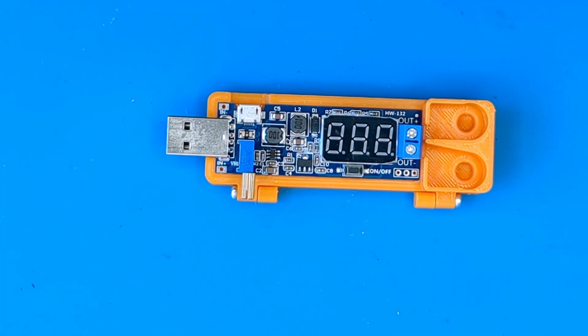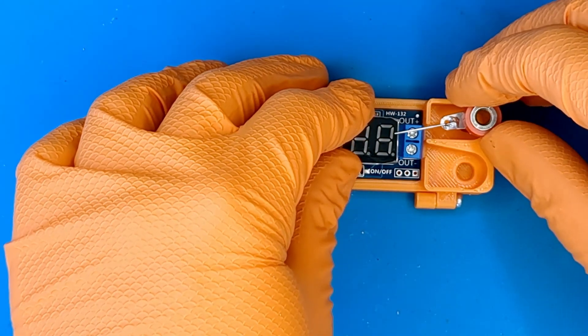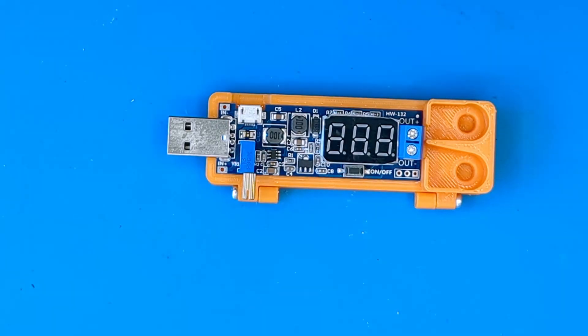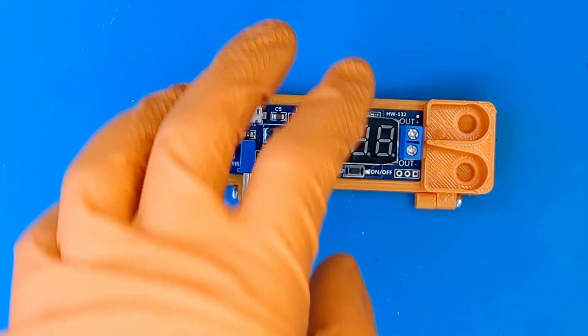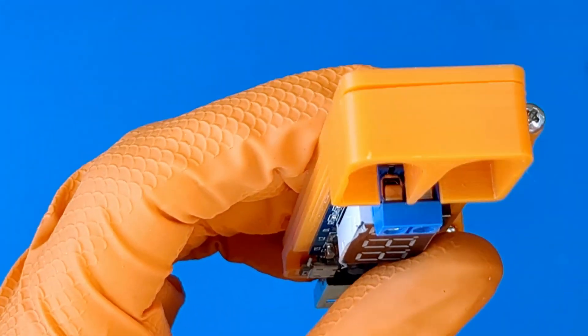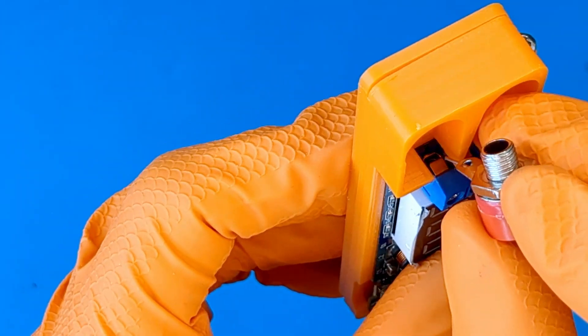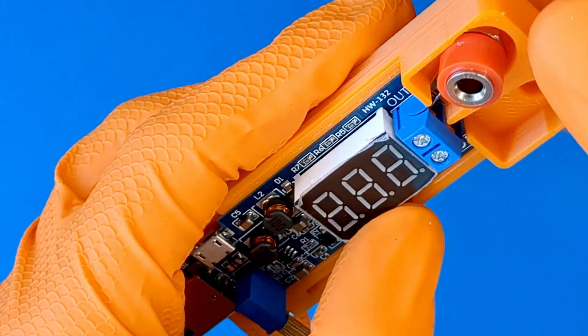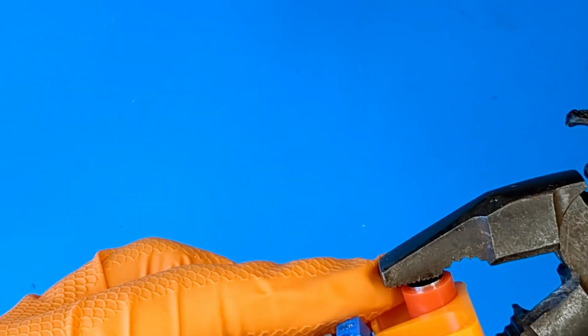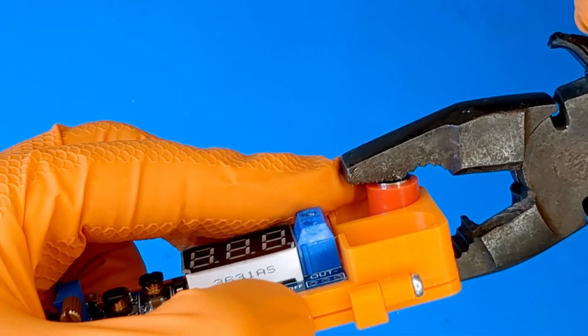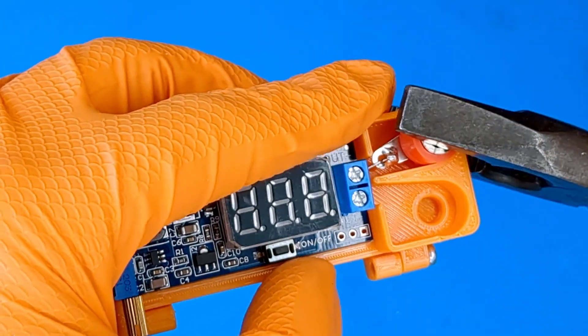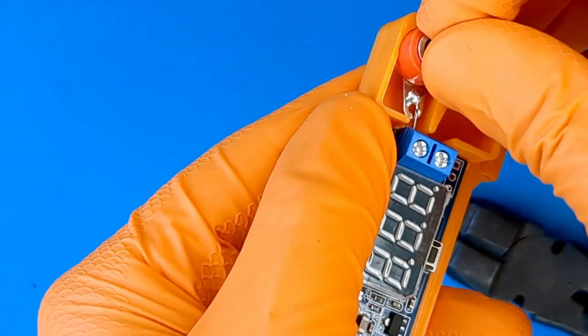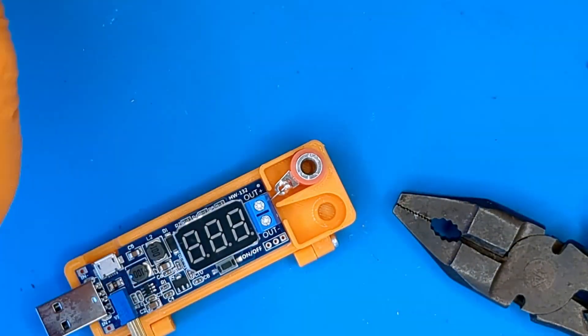Next, we will properly cut the wires that were previously soldered to the banana connectors. After that, we will insert the wire into the screw terminal and press the connector into the hole. The 3D printed objects are designed to firmly fix the connector. Repeat the same process for the second connector.